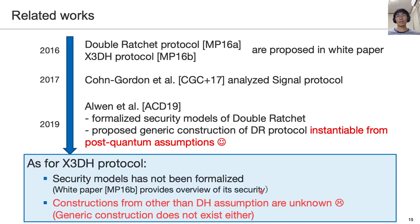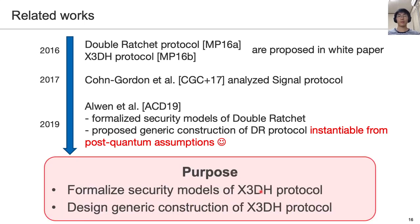On the other hand, as for the X3DH protocol, the security models have not been formalized. In addition, there are no known constructions from other than Diffie-Hellman assumptions, as well as no generic constructions. Thus, post-quantum X3DH is lacking. The purpose of this study is twofold. First, we formalize the security models of the X3DH protocol. Second, we design a generic construction of the X3DH protocol that can be instantiated from post-quantum assumptions.